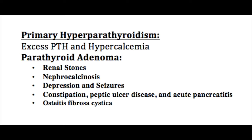With hypercalcemia, there is high filtration of calcium into the urine, so patients can develop kidney stones or nephrolithiasis. Another consequence is that high levels of calcium in the blood increase the risk for deposition of calcium on tissues, called metastatic calcification. The classic example of metastatic calcification is nephrocalcinosis, where calcium deposits in the tubules of the kidney.